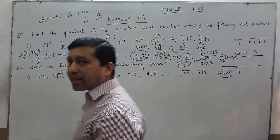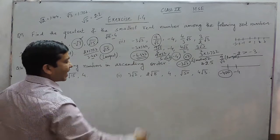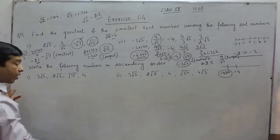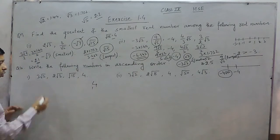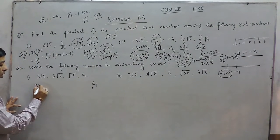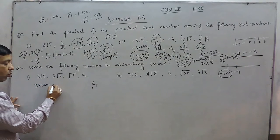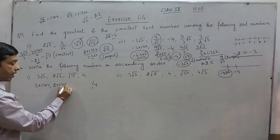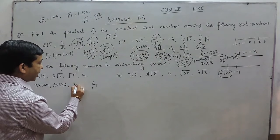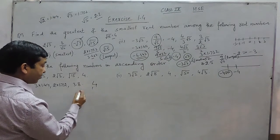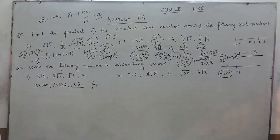In the case of irrational numbers, we have to use the approximation rule. For writing numbers in ascending order: 4 is automatically 4. When we talk about 3√2, it is 3 into 1.414. When we talk about 2√3, it is 2 into 1.73. When we talk about under root of 15, this is approximately 3.8 — we generalized this approximation in our chapter on square roots, where there is a dedicated class on how to find the approximation.